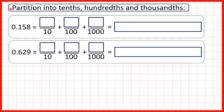We need to partition these numbers into tenths, hundredths and thousandths. So first we have 0.158 and we can show the partitioning in both fraction and decimal form. The first digit after the decimal point is the tenths digit, so we have one tenth.